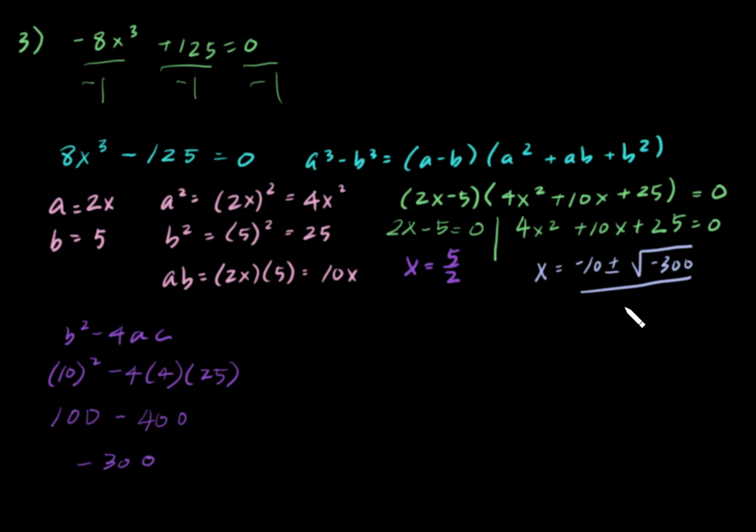It's just 4. It's already been done. You just pop it right in. And then, negative 10 plus or minus. And then, we have a negative, so that's an i.